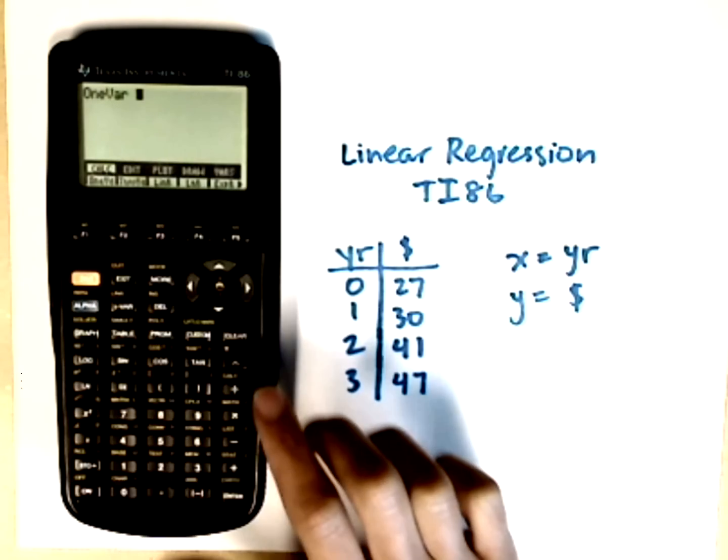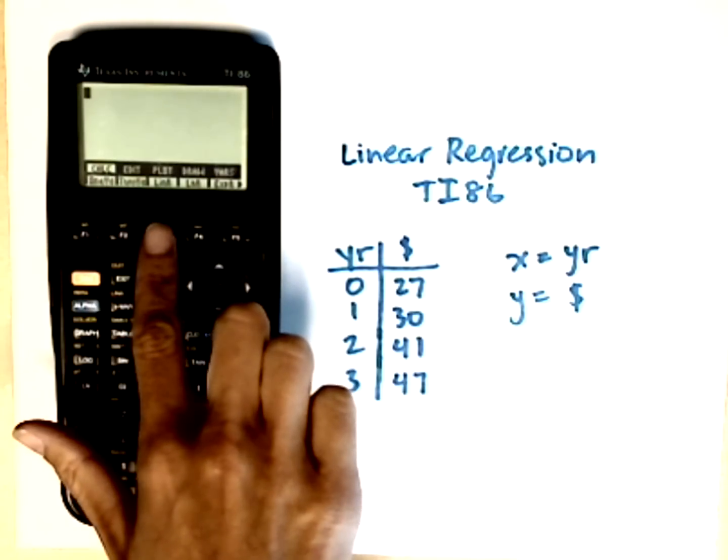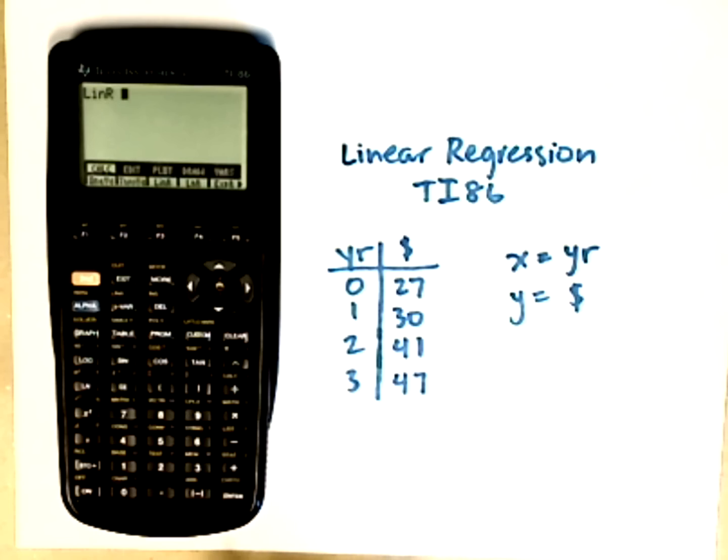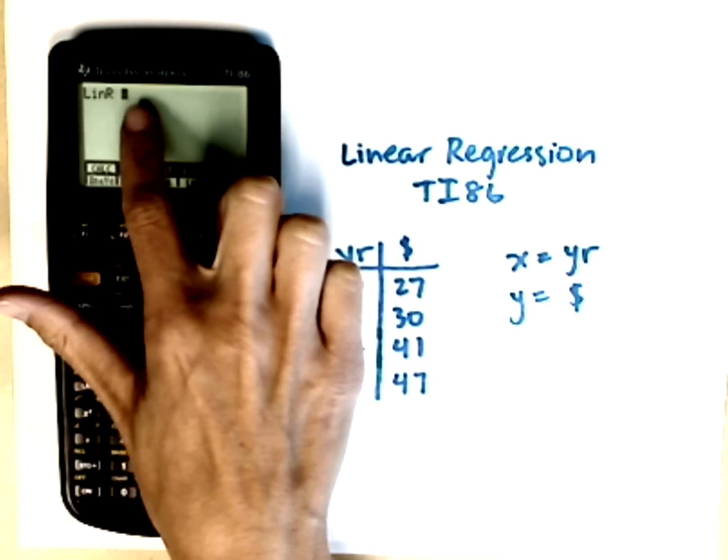I want a calculation, so I choose F1 for calc. I want a linear regression. Oh, let me clear that, I accidentally hit it twice. I don't want one var. I want a linear regression, which is the third one. So I hit L-I-N-R for linear regression. Don't hit enter yet because it's waiting to know what data you want.